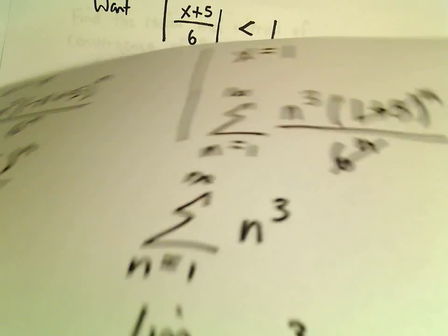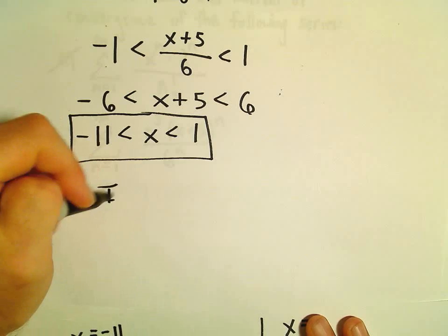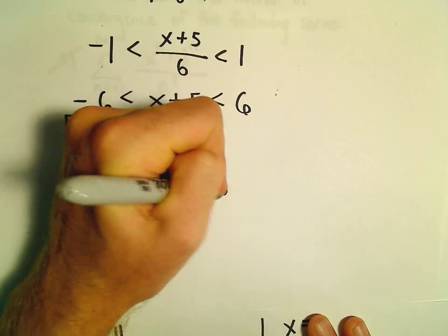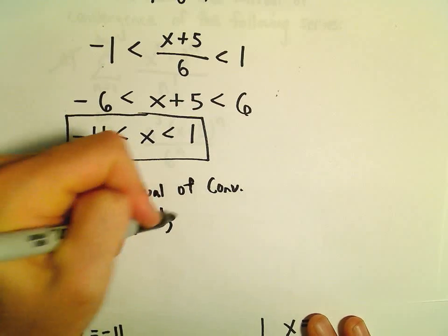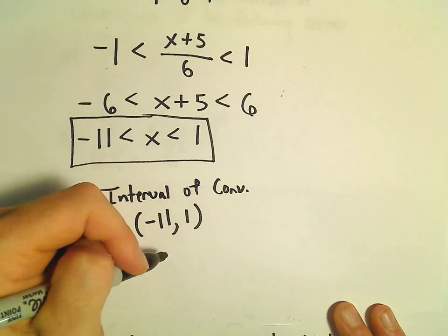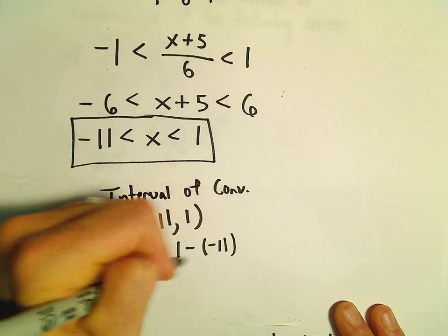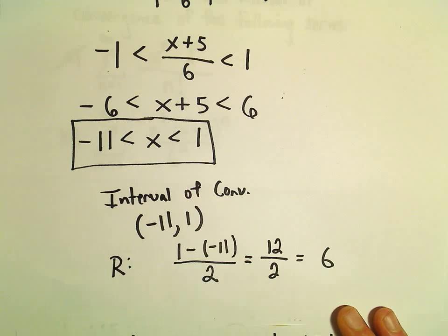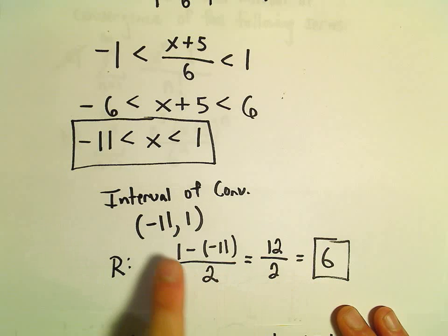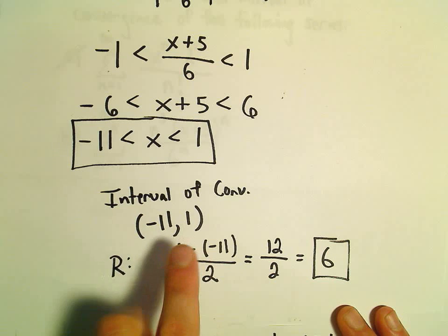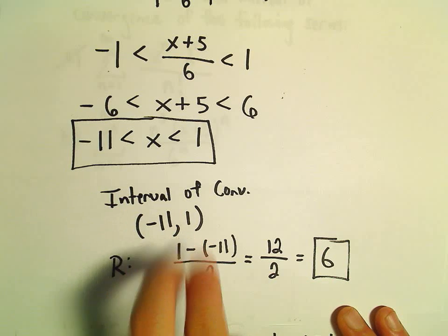So that tells us the interval of convergence is from negative 11 up to positive 1. The radius is just the length of that interval divided by 2: 1 minus negative 11 equals 12, divided by 2 gives us a radius of convergence equal to 6. The interval of convergence is negative 11 to positive 1, with parentheses because it does not converge at the endpoints.